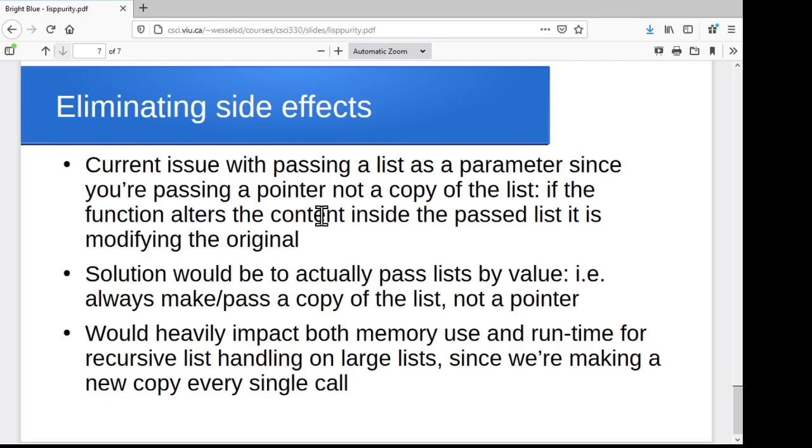Eliminating side effects might be a little bit on the nastier side for our implementation. The current issue that we've got when we're passing a list as a parameter is that we're passing a pointer to the thing. And so if we go through that pointer and change the contents, you're actually changing the original. And it all comes down to this idea that you're passing pointers, not passing a value copy of the list.